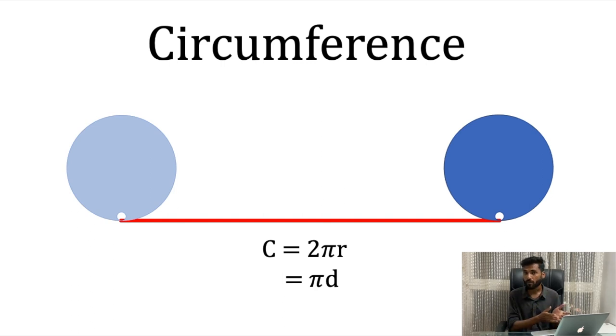But right now, circumference, the perimeter of the circle, equals 2 pi r or pi d. Remember that is a very important formula. The length of the outermost layer of the circle is 2 pi r.